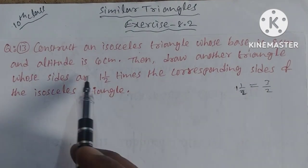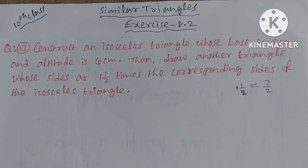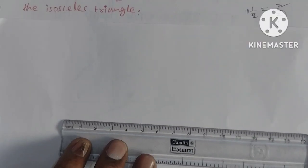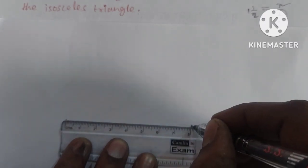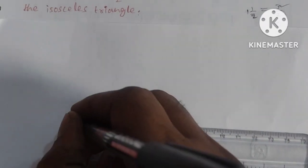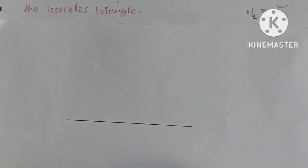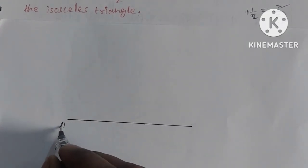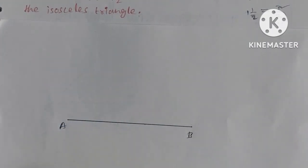Same as 11th and 12th questions. First we draw a line of 8 cm for the base. This is A, B, and this is AB.